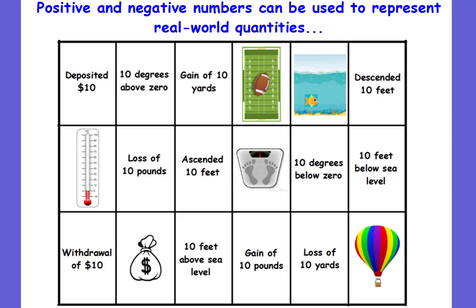Positive and negative numbers can be used to represent real-world quantities — we see this all the time. Football: if we have a gain of ten yards, the word 'gain' is the clue word telling you it's going to be a positive ten. And what's the opposite of a positive ten? A negative ten. So a loss of ten yards would be a negative ten — loss is the opposite of a gain. It's very important to know these clue words that tell you if you're talking about a positive or a negative.